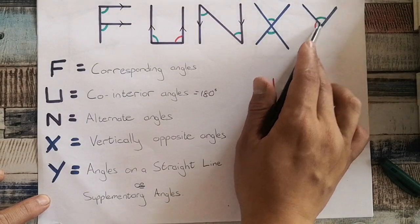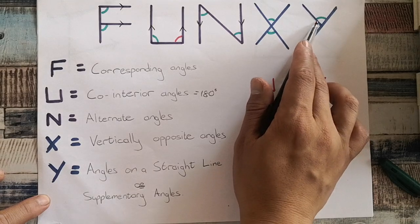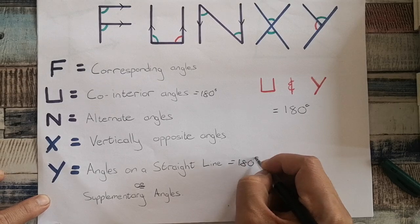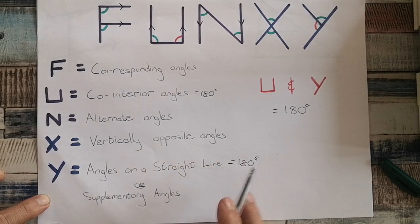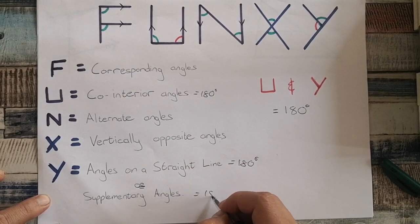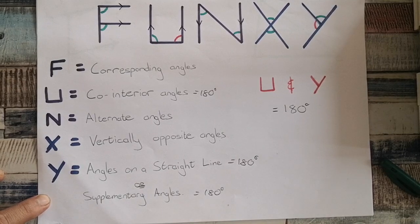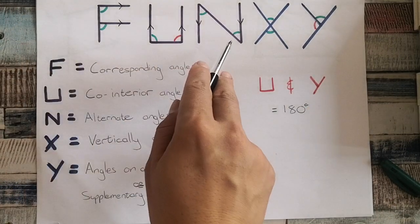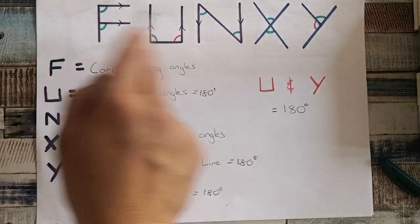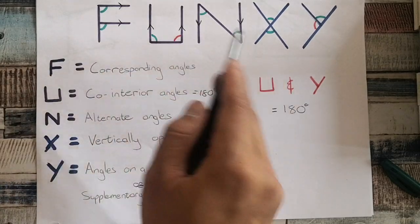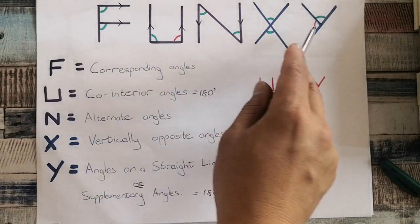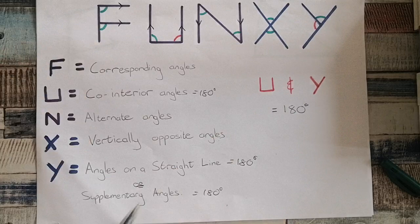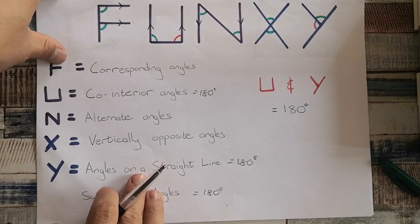And lastly, angles on a straight line — here is my straight line — which means this angle plus this angle must equal 180 degrees. It's either called angles on a straight line, or supplementary angles equal to 180 degrees. So the important thing to know: FUN can only work with parallel lines, and your U and your Y are equal to 180. That's the most important thing you need to know for FUNCSI.